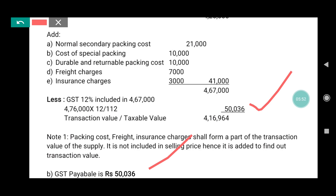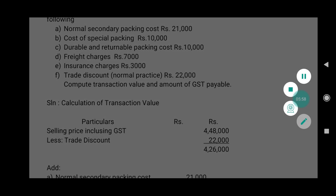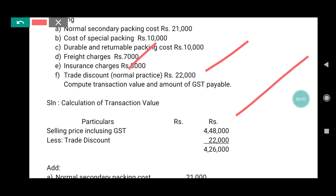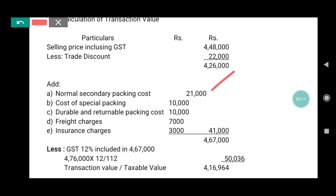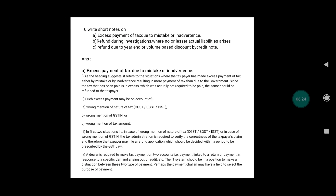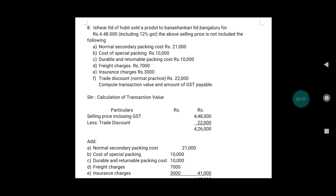So overall, the problem is simple: we calculate transaction value and GST payable. The selling price is ₹4,48,000; deduct discount of ₹22,000 to get ₹4,26,000; then add normal packing cost, special packing cost, returnable packing cost, freight charge, and insurance charge. Then gross up for GST. The rule is: packing cost, freight, and insurance are part of the value of supply, so they must be included. This was the 2019 exam problem.